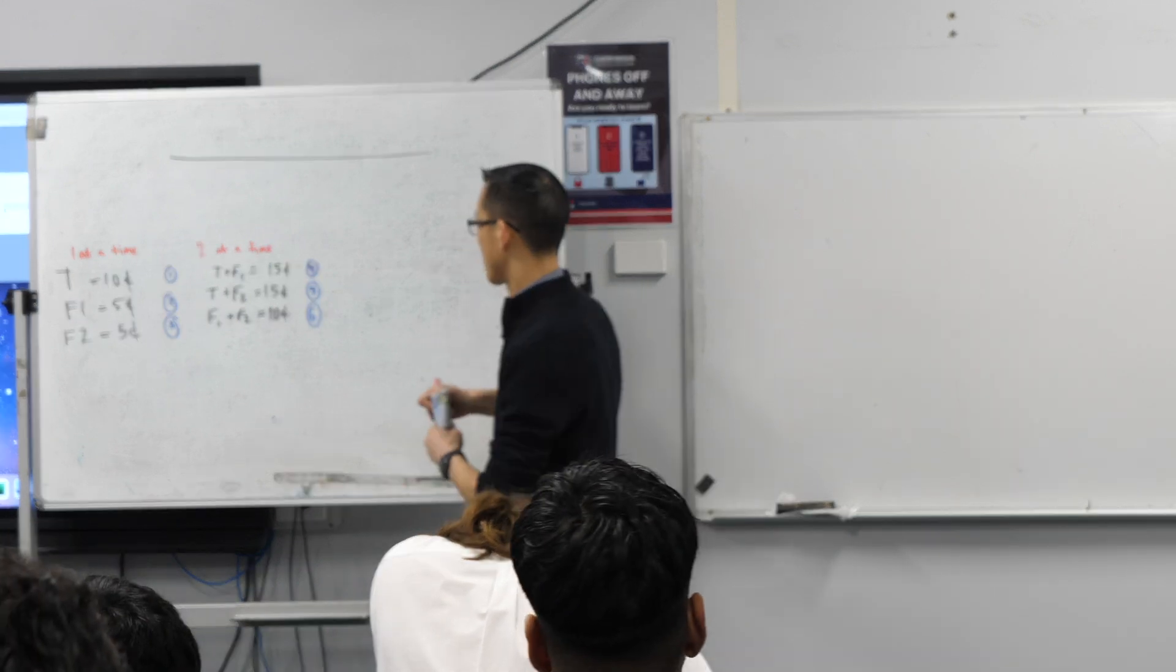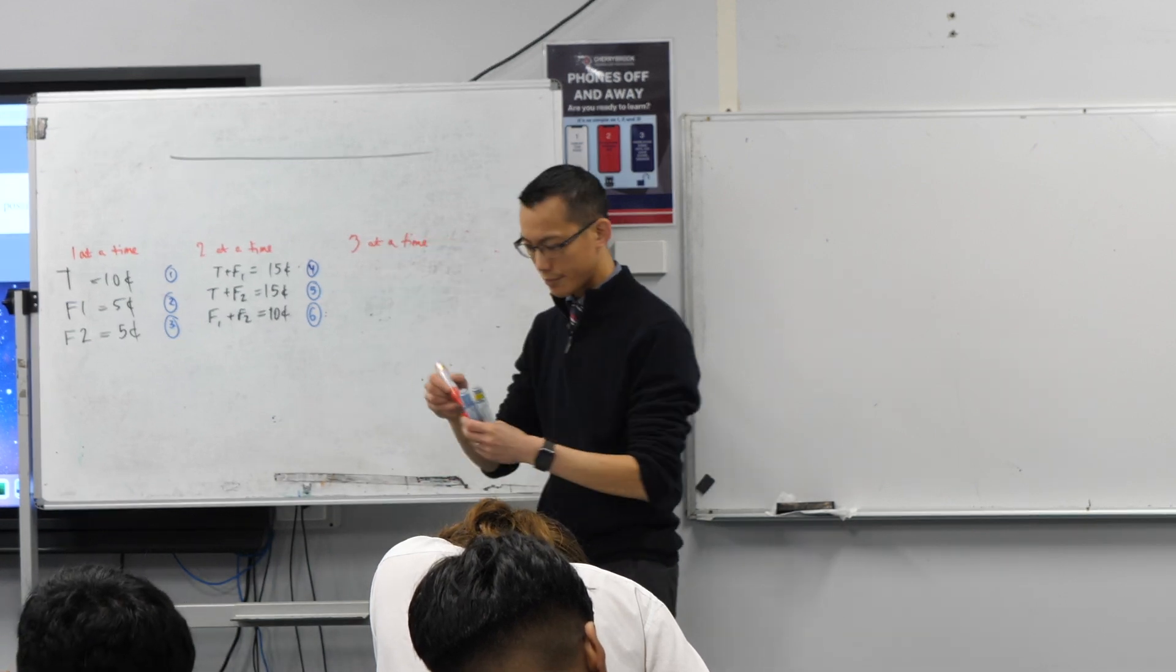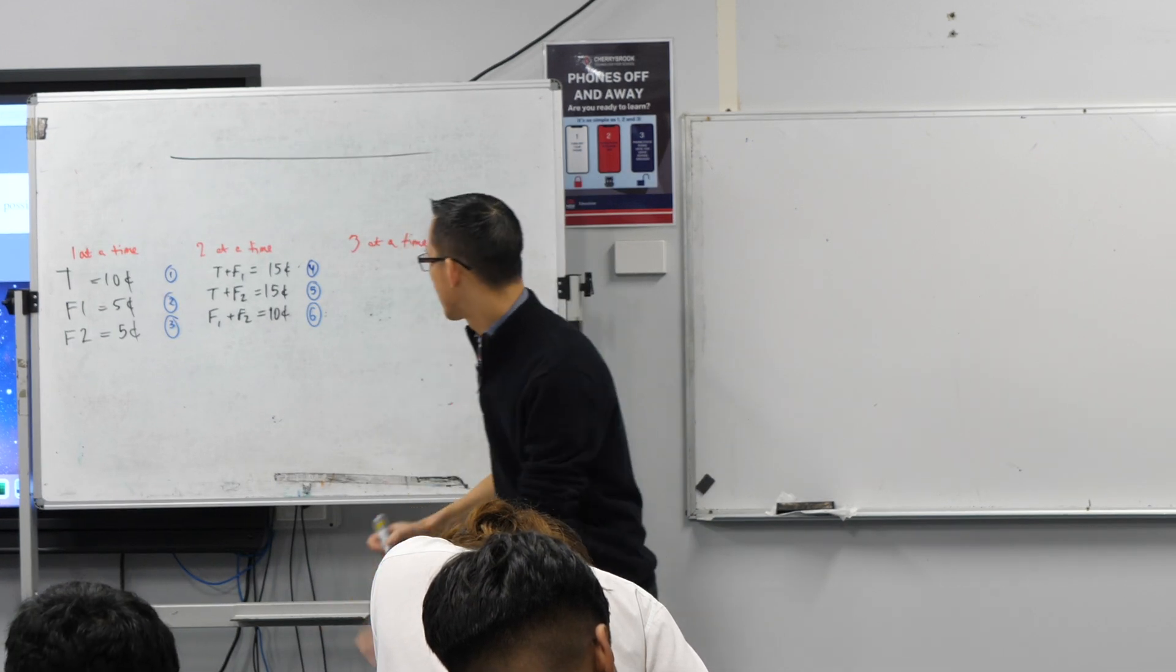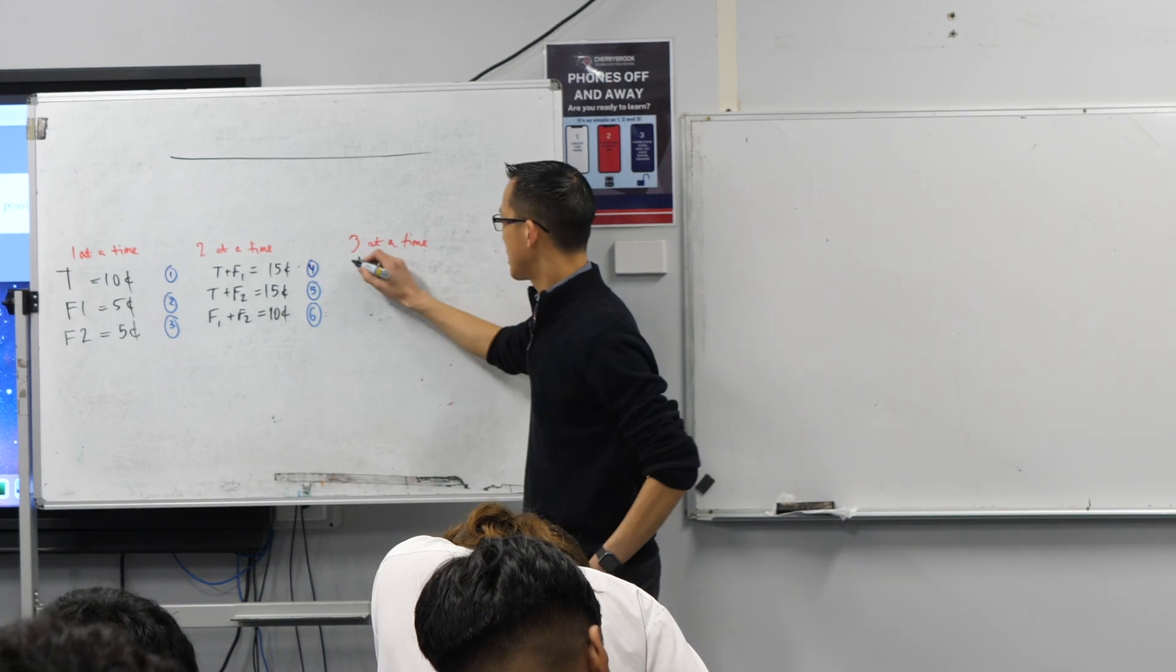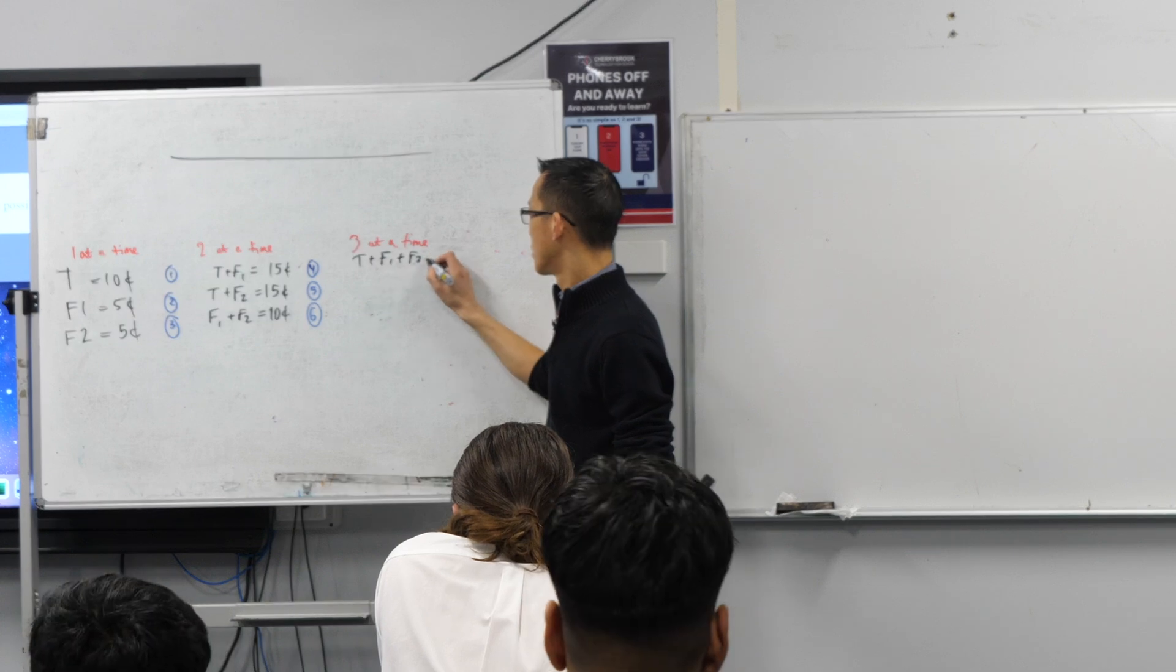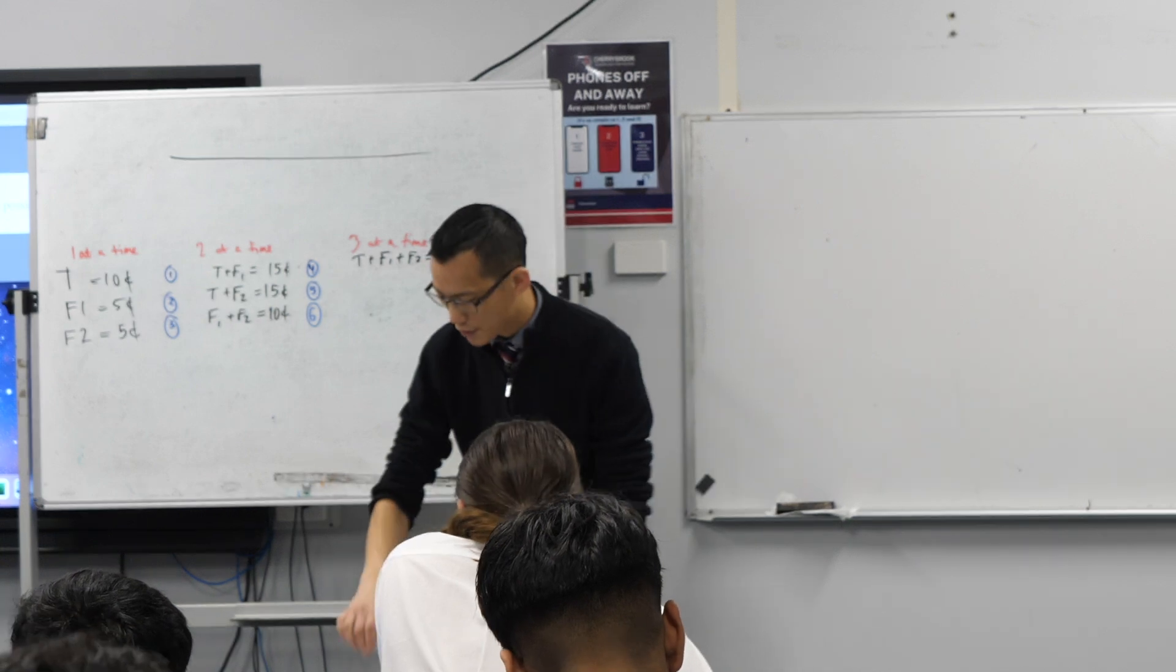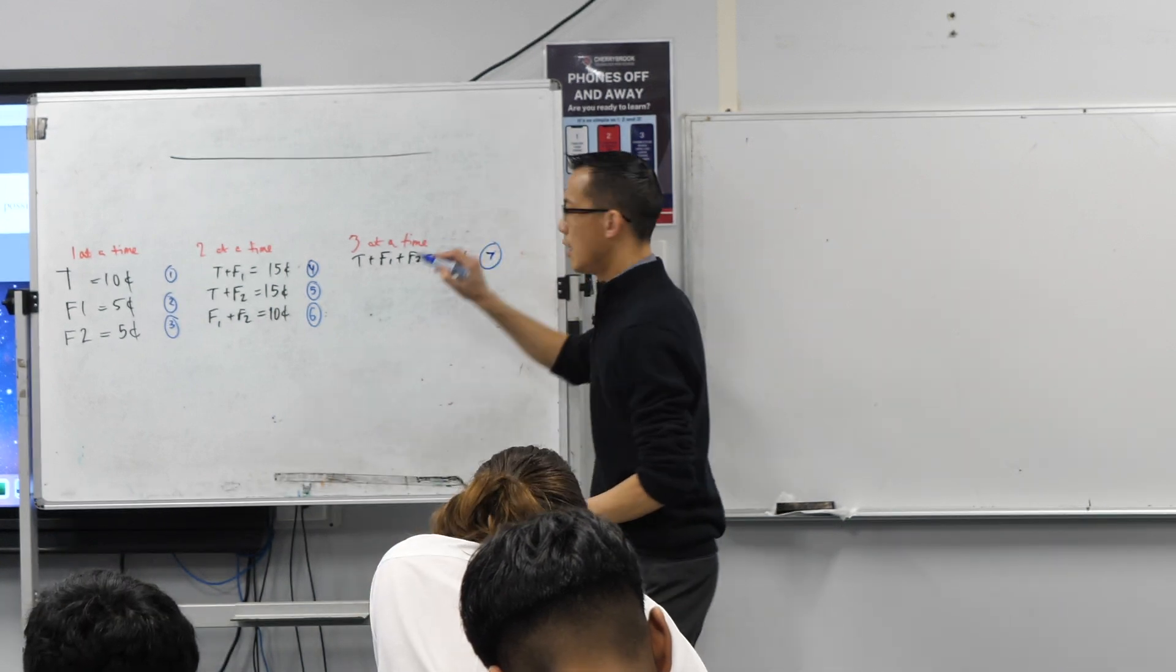There's only one left. And what is that? All three of them. So I'll go three at a time. And then we can say, what have I got here? T plus F1 plus F2. And that's obviously 20 cents in total. Fantastic. There's option seven.